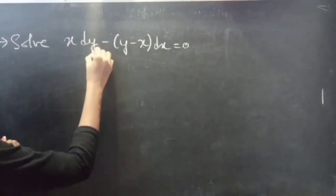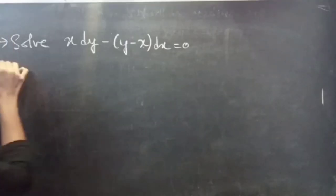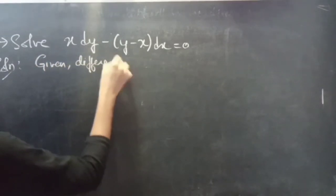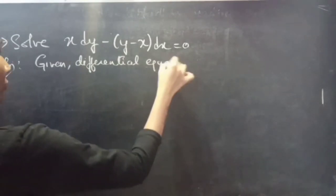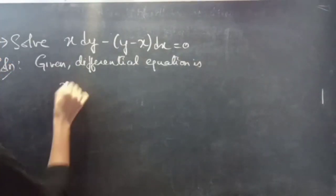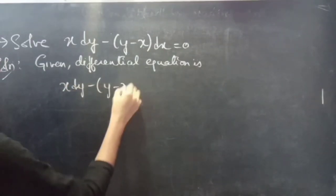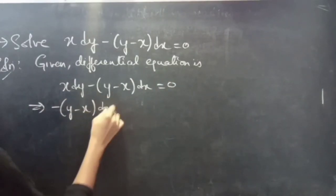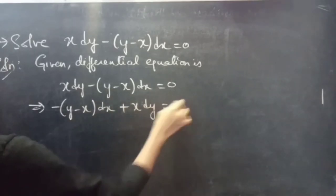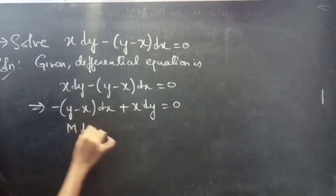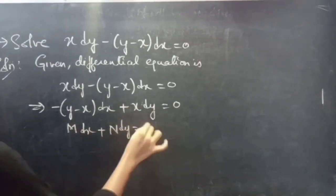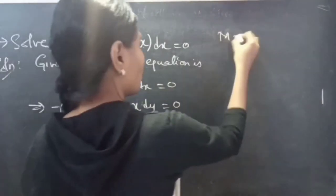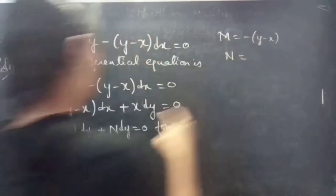Problem: solve x dy minus of (y minus x) dx equals to 0. The given differential equation is x dy minus (y minus x) dx equals to 0, which is in the form M dx plus N dy equals to 0. So here we have M equals to minus of (y minus x) and N equals to x.